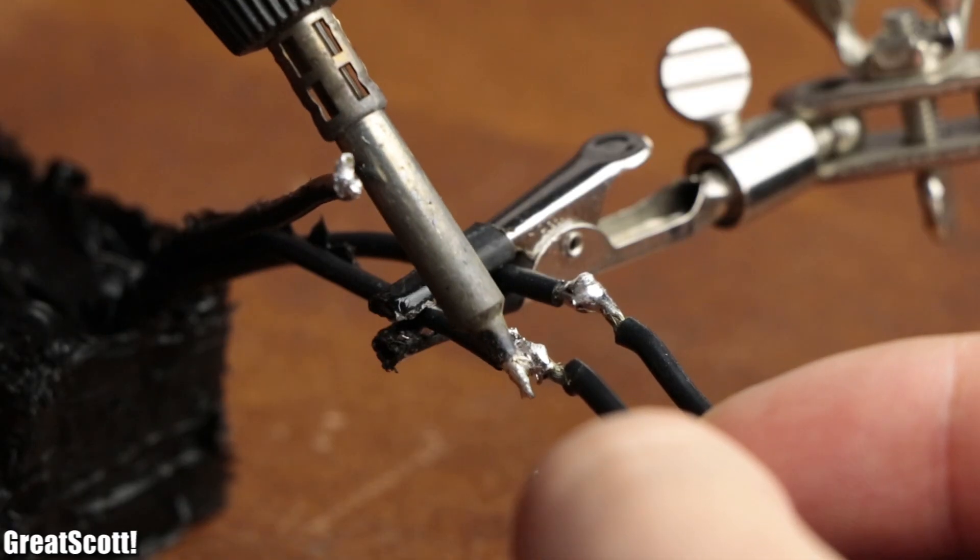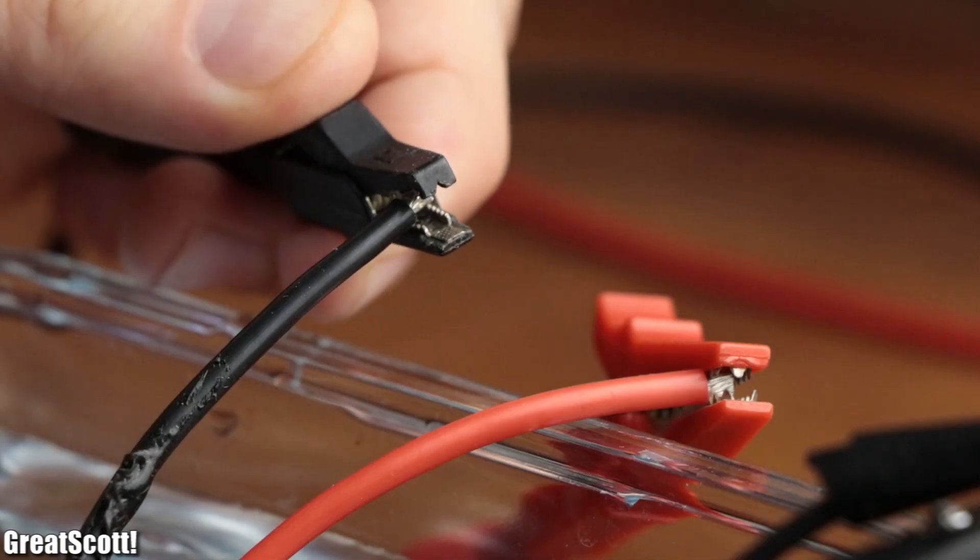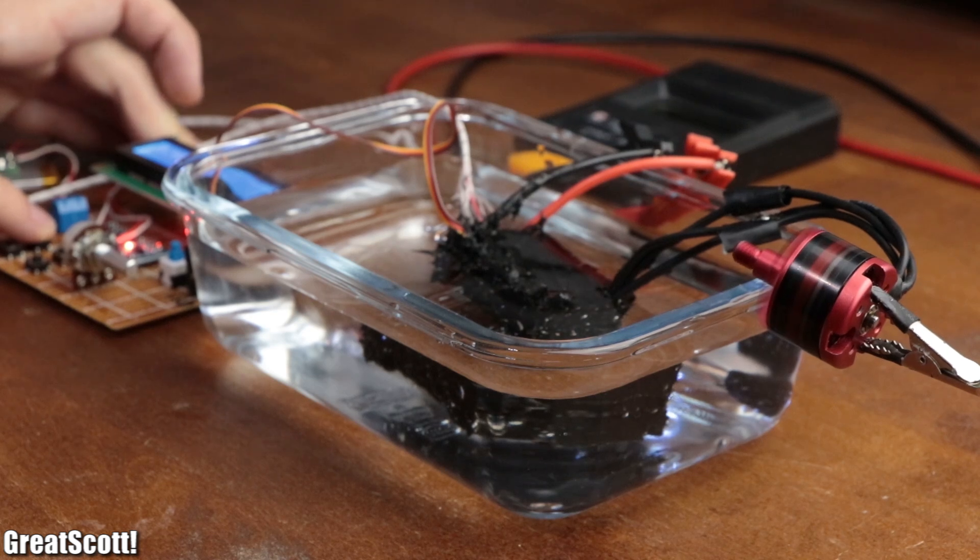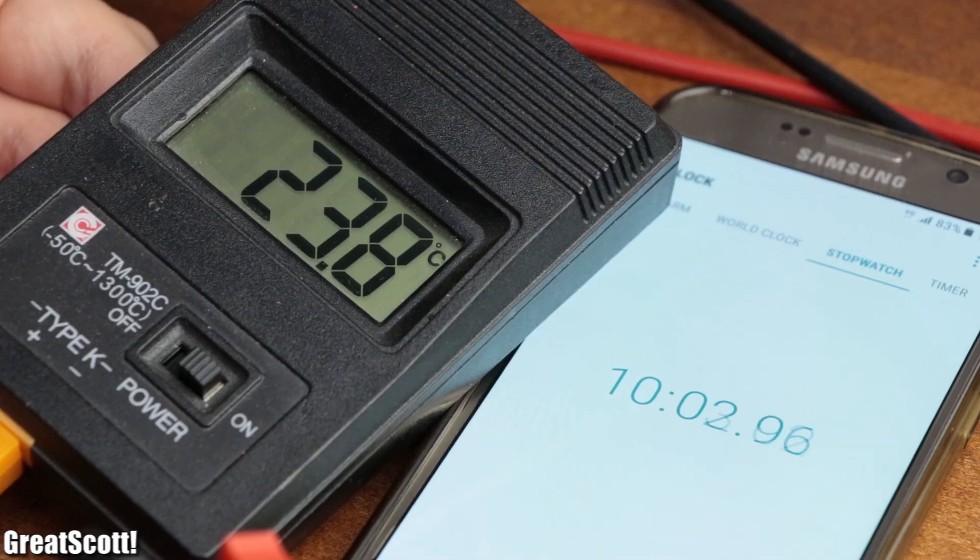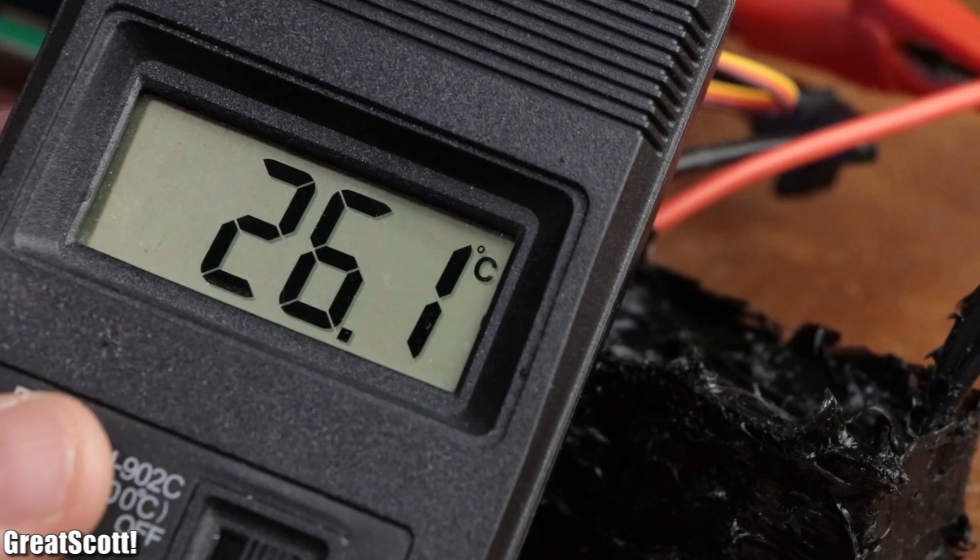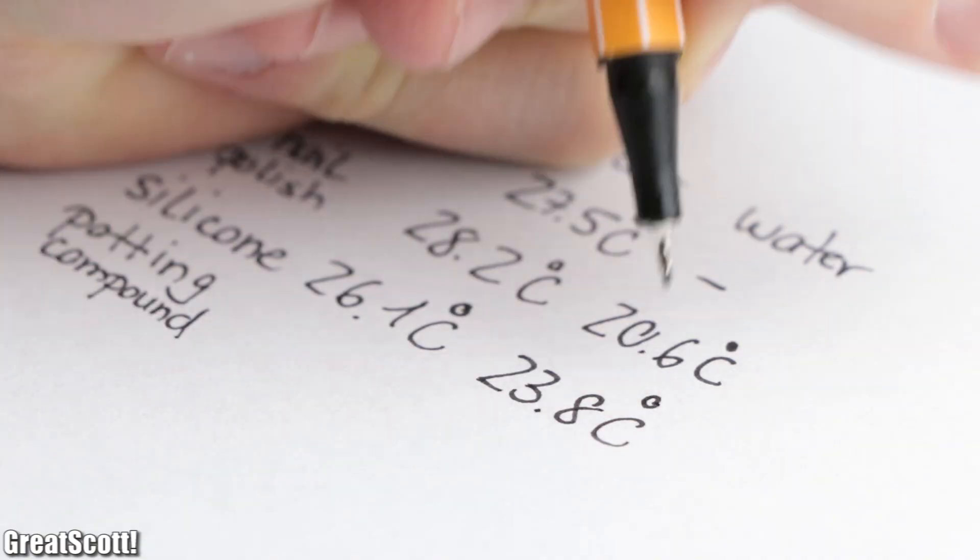And after reattaching the motor, submerging the silicone covered ESC and powering it all, it looked like everything still worked flawlessly. So I repeated the same temperature measurement underwater and in air, which ultimately delivered values which were pretty close to the previous ones. Not bad.